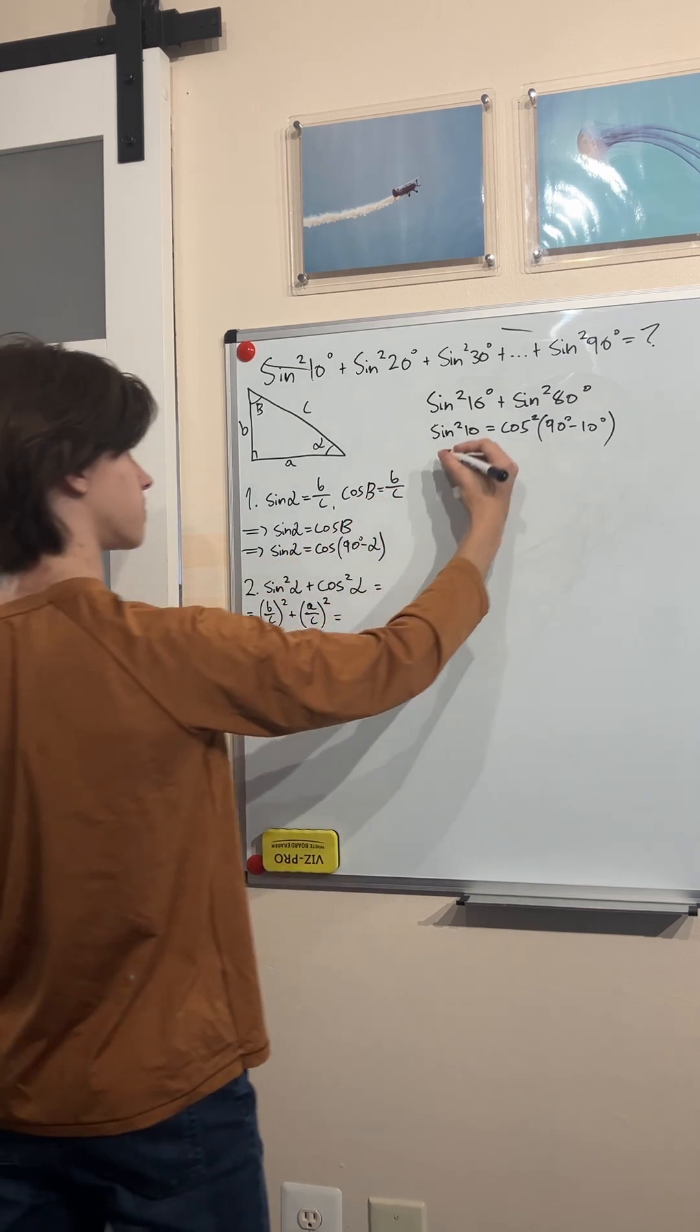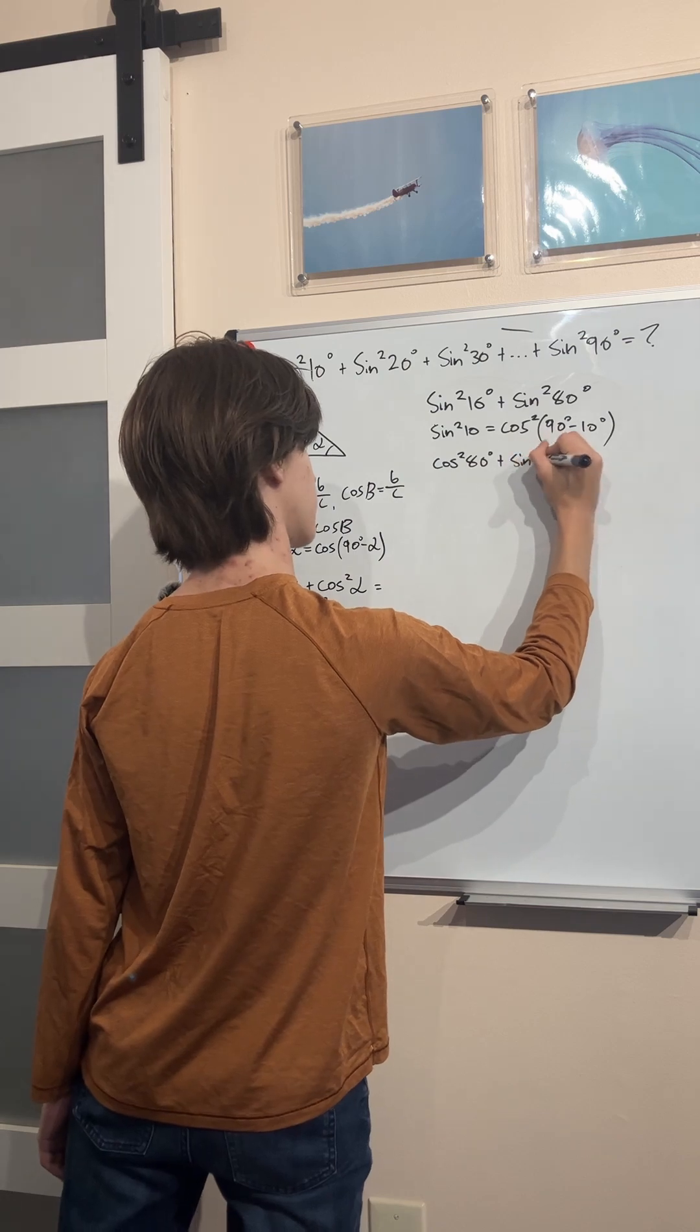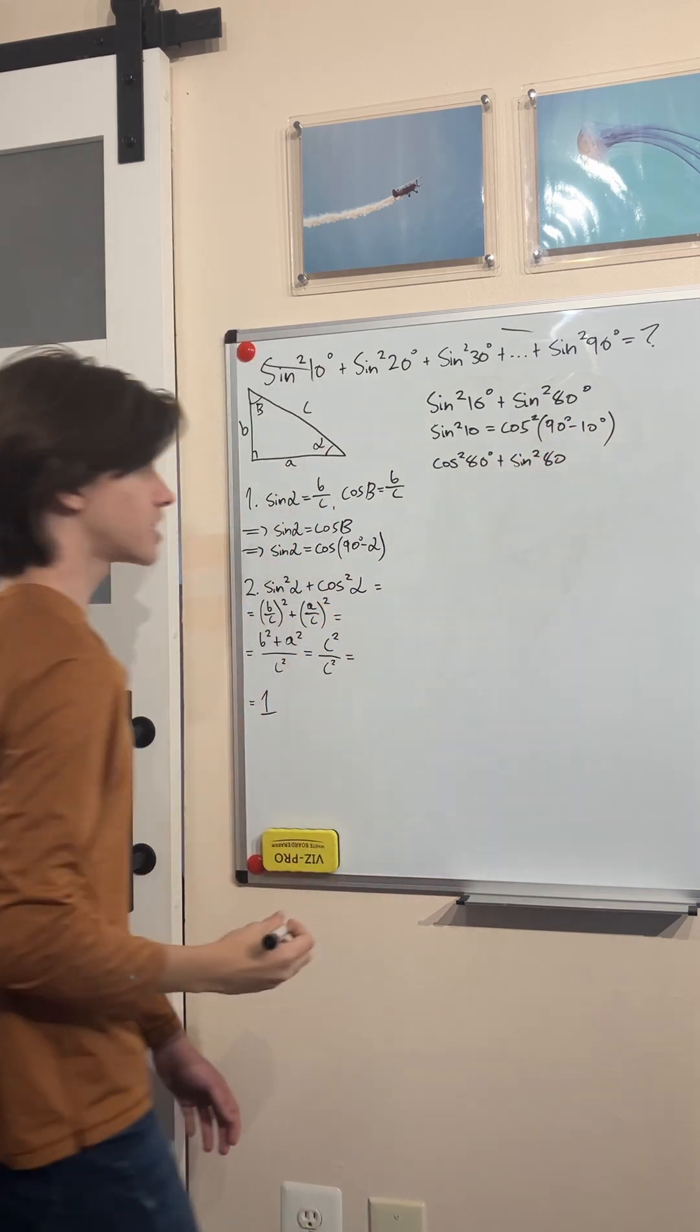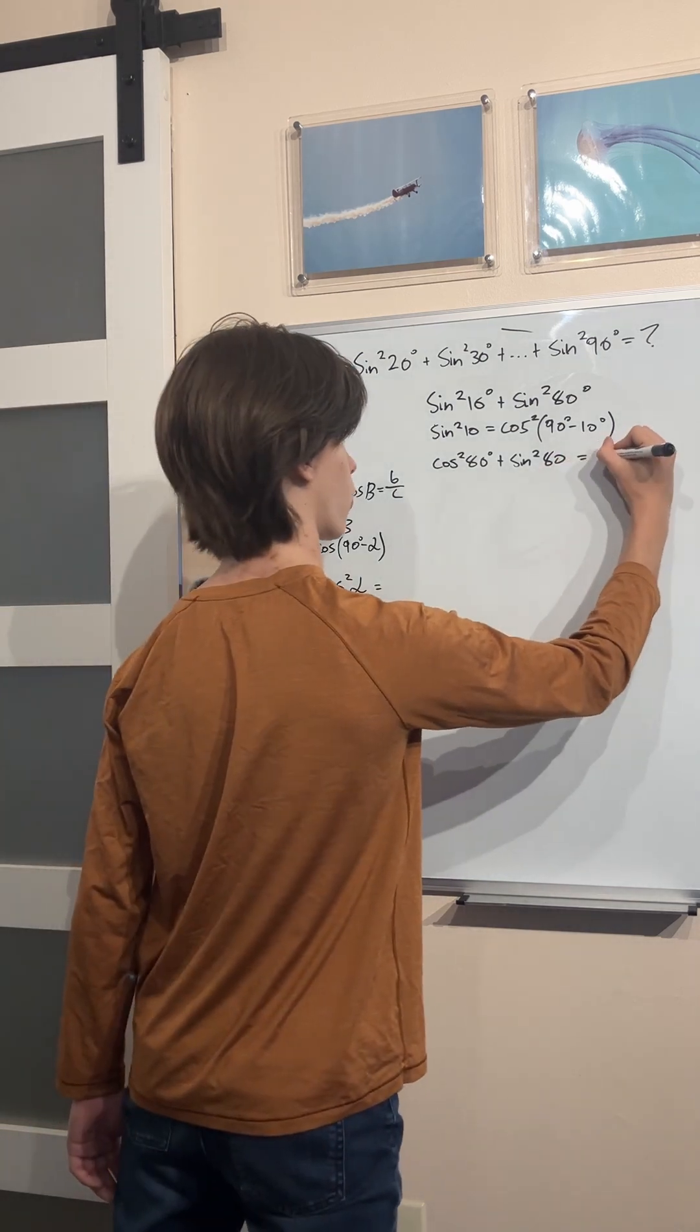Now we plug this back in here. We get that the cosine squared of 80 degrees plus the sine squared of 80 degrees. What is that equal to? Same angle sine and cosine squared. That's equal to one.